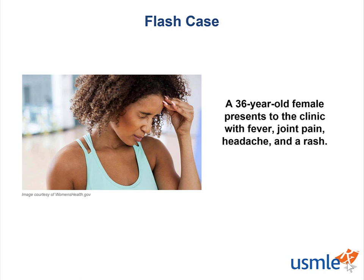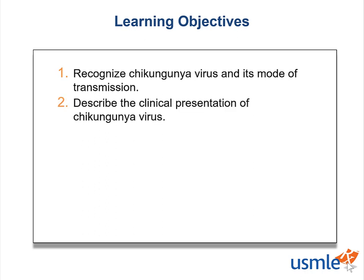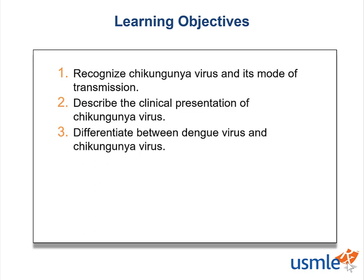Let's say a 36-year-old female presents with fever, joint pain, headache, and a rash. Let's see how she could have gotten this, what other symptoms she may have, and compare it to similar viruses. Our learning objectives are to recognize chikungunya virus and its mode of transmission, describe the clinical presentation, and differentiate between dengue virus and chikungunya virus.